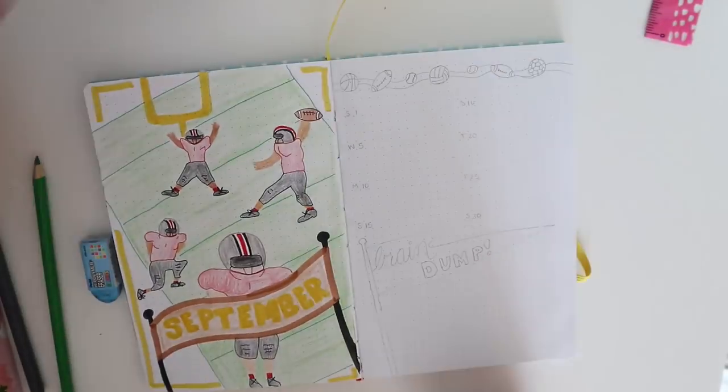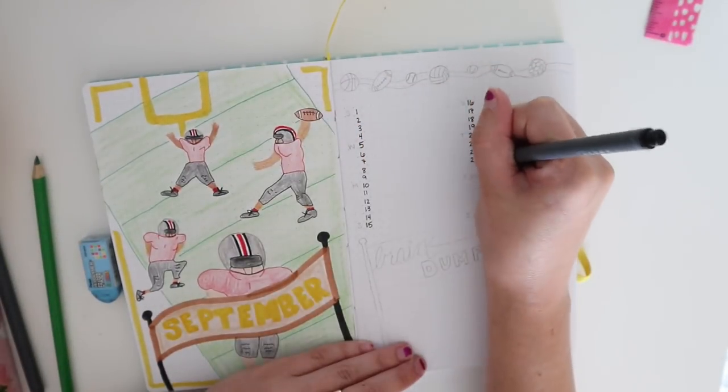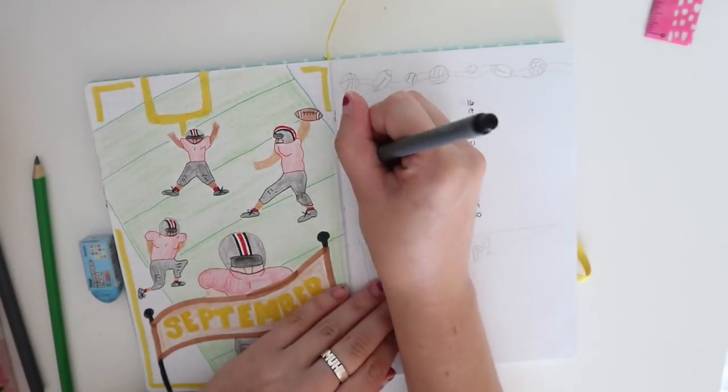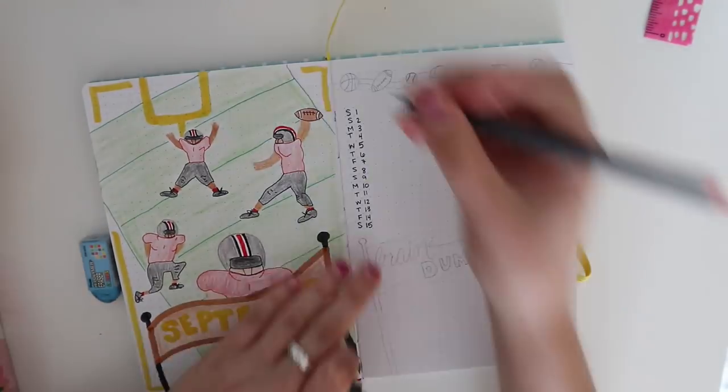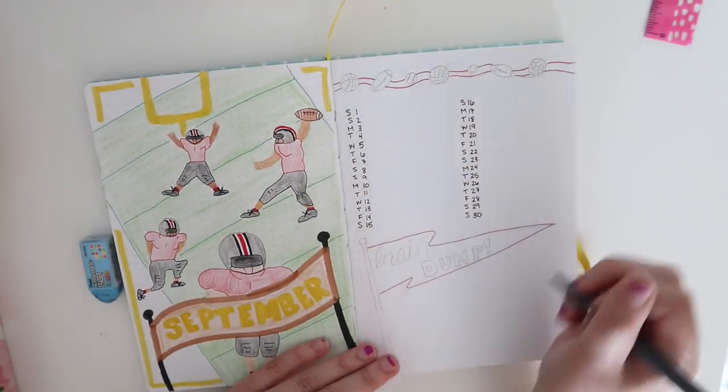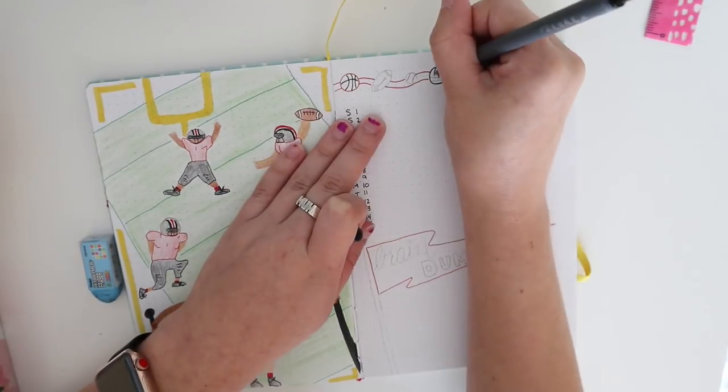Moving on to the next page is my month at a glance page. Y'all know I love the vertical layouts for my month at a glance, but instead of using the whole page this month I decided to split it in half and do kind of a brain dump at the bottom.